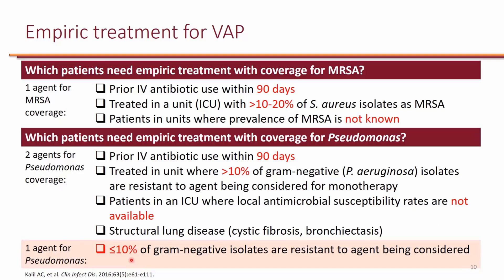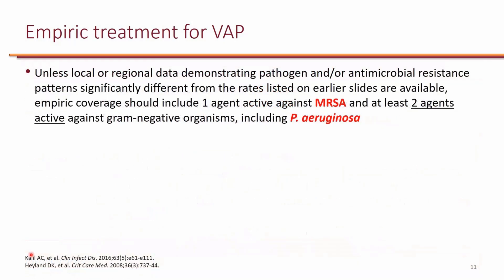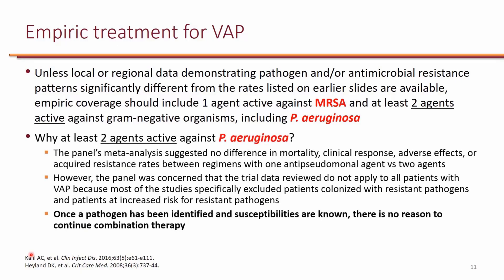If you are in an ICU where the susceptibility rate for a specific agent is more than 90% — meaning resistance is less than 10% — then a single agent is sufficient. Keep in mind that most anti-pseudomonal antibiotics, with the exception of ciprofloxacin, do not cover MRSA. So when using two agents active against Pseudomonas, a third agent — typically vancomycin — is added for MRSA coverage. The reason for two empiric anti-pseudomonal agents is so that if one doesn't cover the Pseudomonas, the other should. Once a pathogen is identified and susceptibilities are known, there is no reason to continue combination therapy.